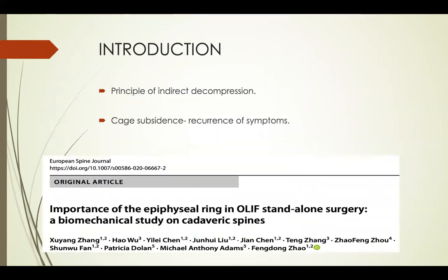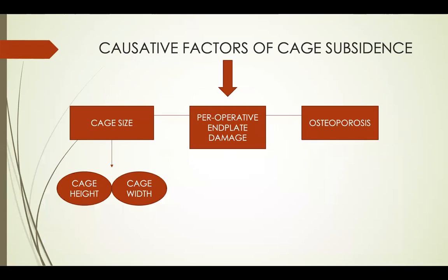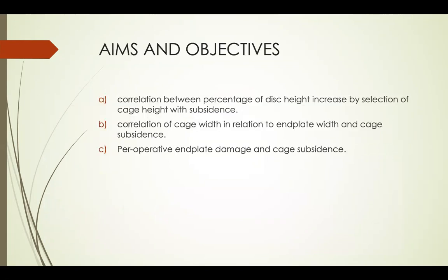The principle of OLLIF is indirect decompression of the spinal canal by jacking up of the disc space. The causative factors of KTH subsidence are cage size — which includes cage height and cage width — peri-operative end plate damage, and osteoporosis.